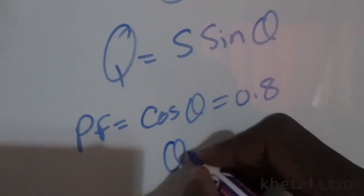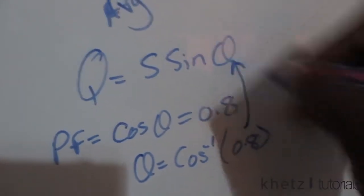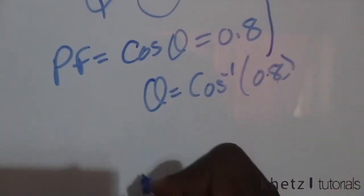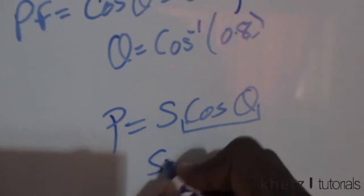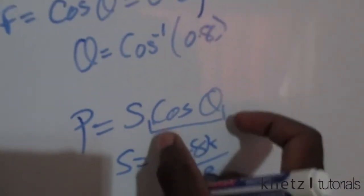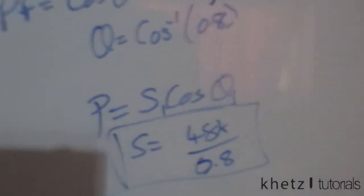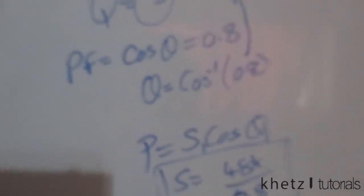To find theta, we use the power factor: cosine of theta equals 0.8, so theta equals arccos(0.8). We don't yet know the apparent power S, so we use the average power formula: P equals S times cosine(theta), giving S equals 48k divided by 0.8.